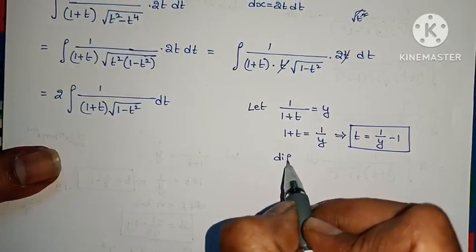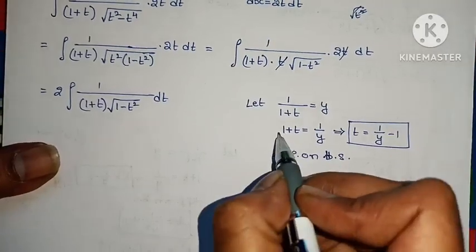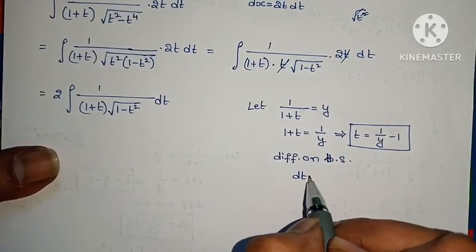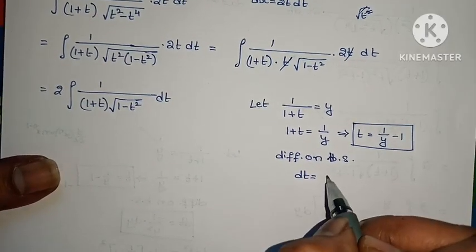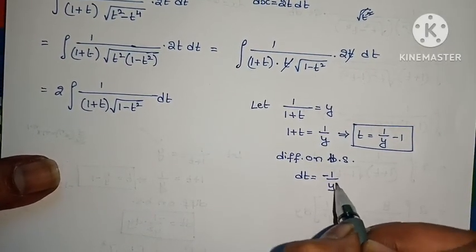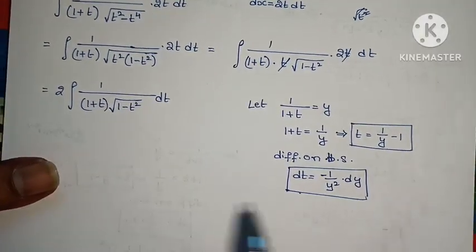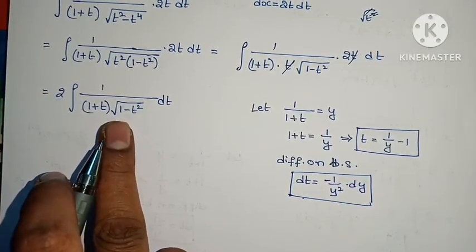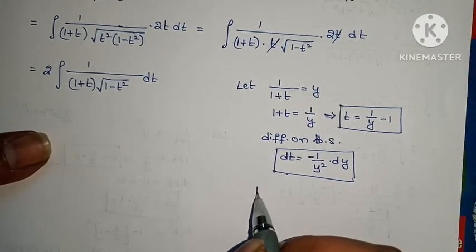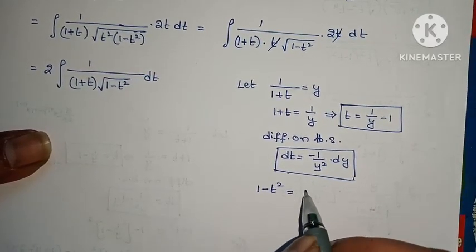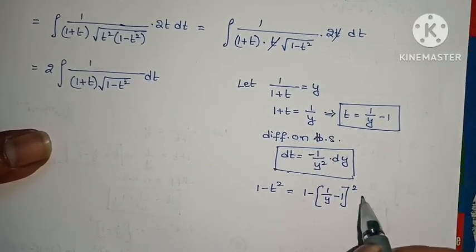Differentiating both sides, dt equals minus 1 by y squared into dy. Now for the 1 minus t squared value: substituting t equals (1 by y minus 1), we get 1 minus (1 by y minus 1) whole squared.